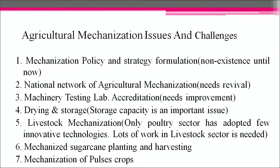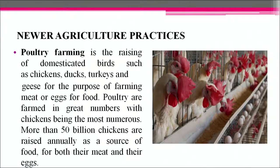New agricultural practices include animal husbandry, poultry farming, apiculture, fisheries and mushroom culture. Poultry farming is the raising of domesticated birds such as chickens, ducks, turkeys and geese for the purpose of farming meat or eggs. More than 50 billion chickens are raised annually as a source of food, both for their meat and their eggs.